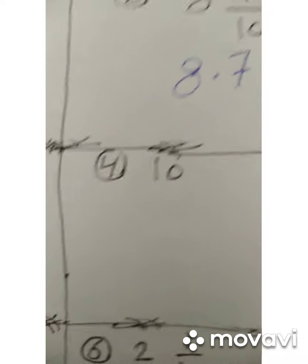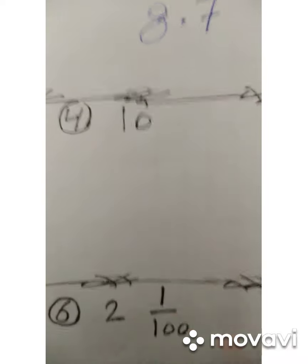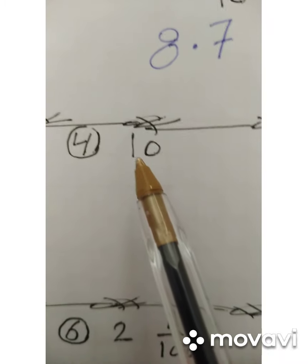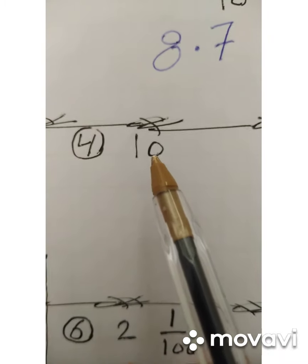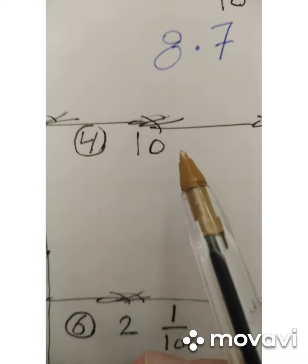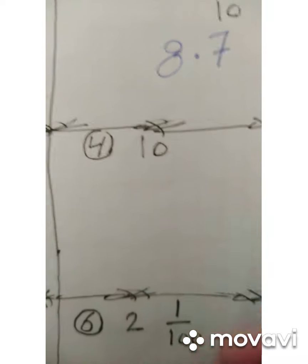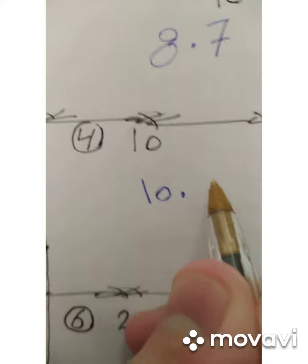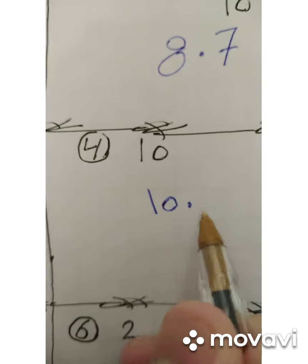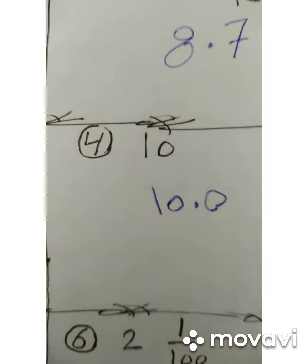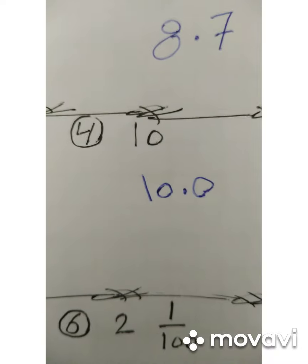Number four: ten. It is not a mixed number — it's a whole number. So how can we rename it as a decimal? Write ten, then put the decimal point. There is no fraction, so put zero. We write it as ten point zero.